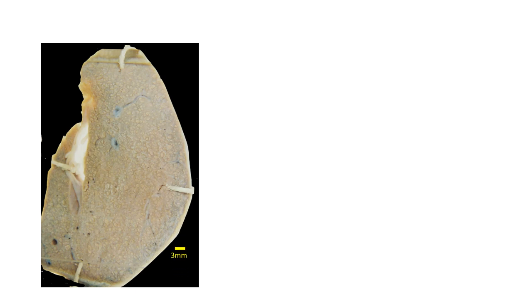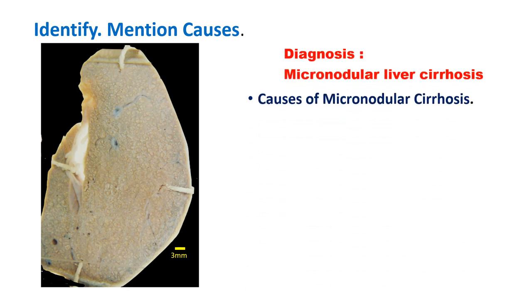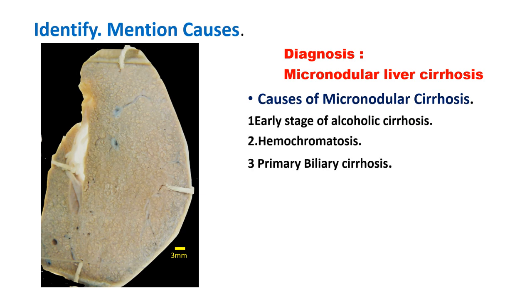The next specimen shows a slice of liver with very fine small nodules replacing the normal parenchyma. The size is less than 3 mm, so this is micronodular cirrhosis. Causes of micronodular cirrhosis include early stage of alcoholic cirrhosis, hemochromatosis, and primary biliary cirrhosis.